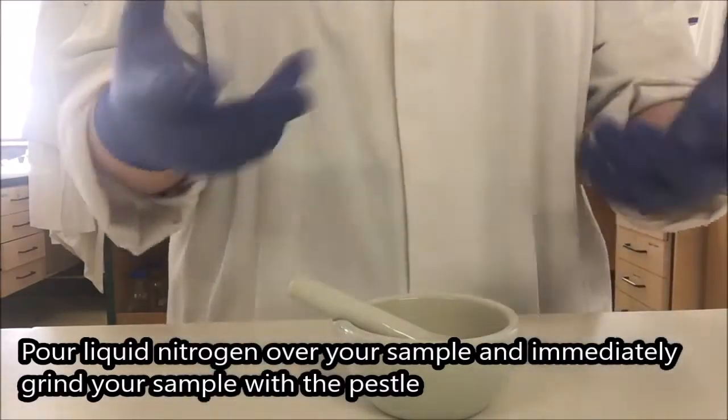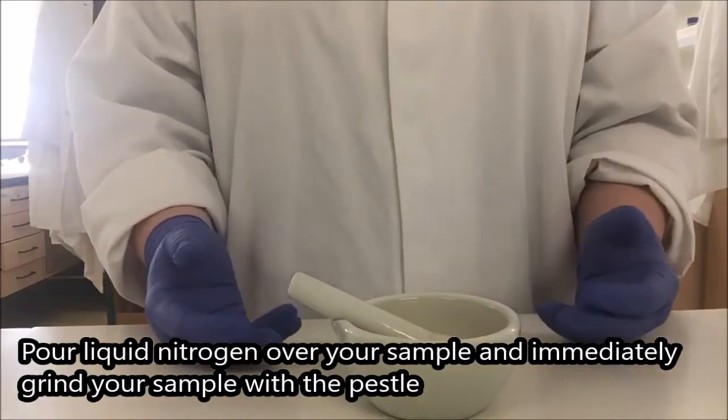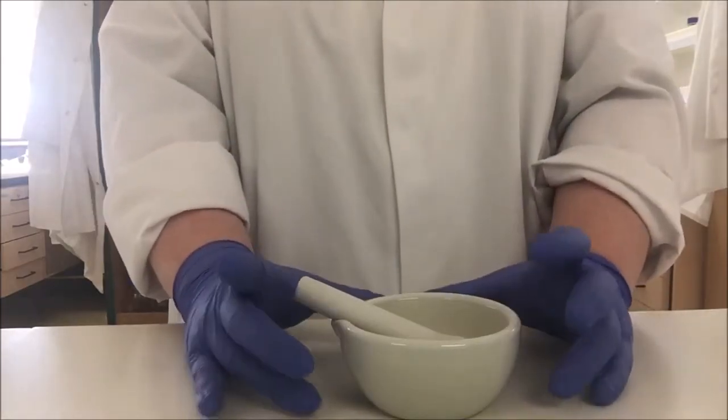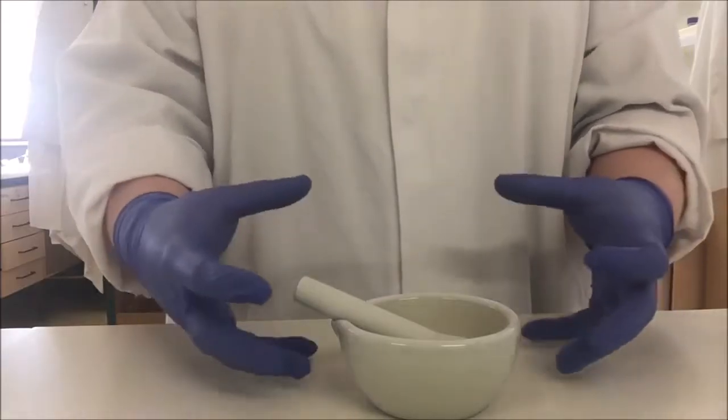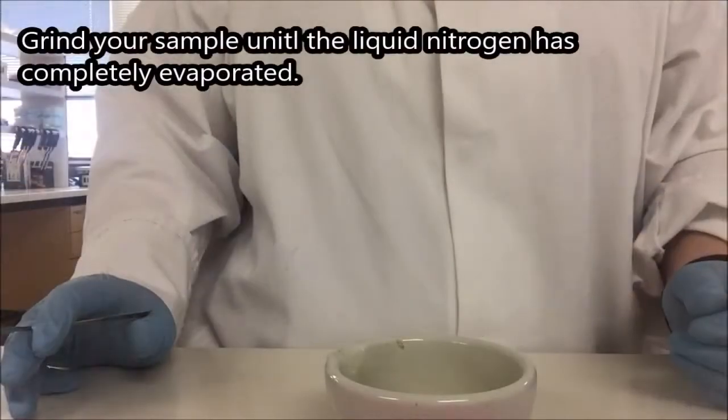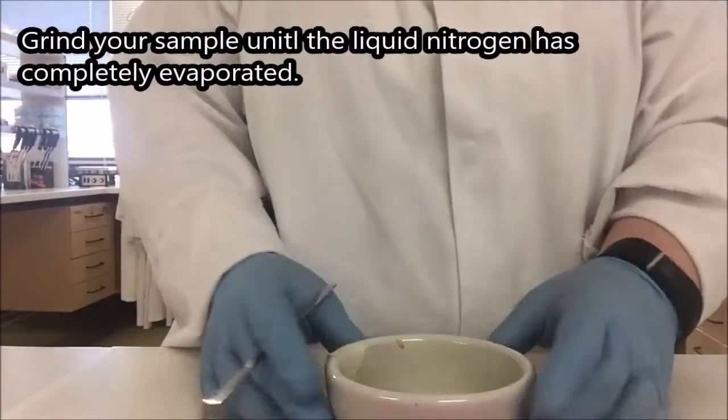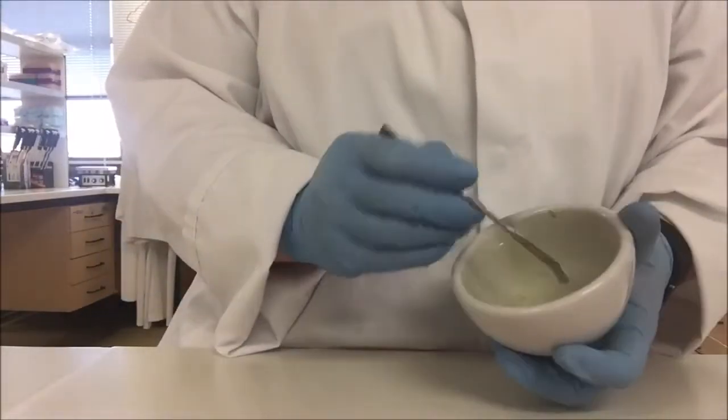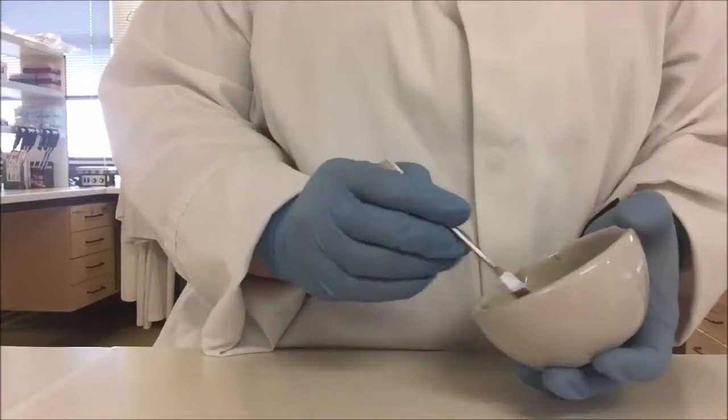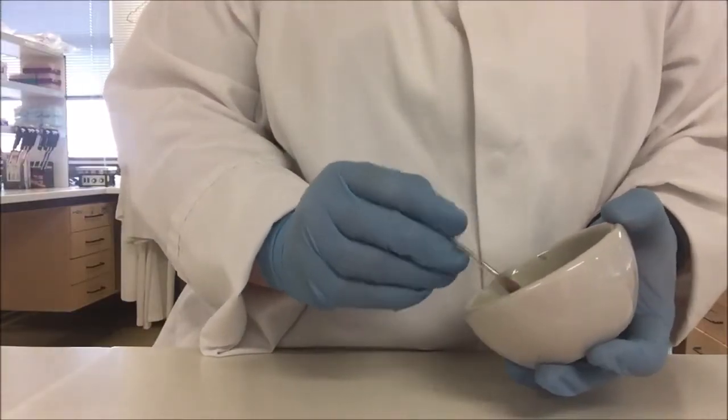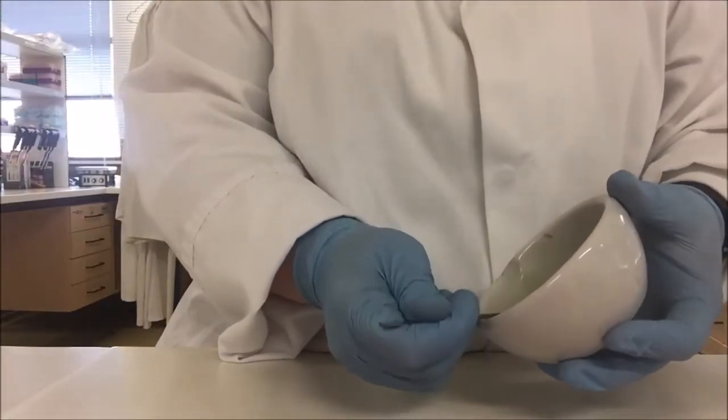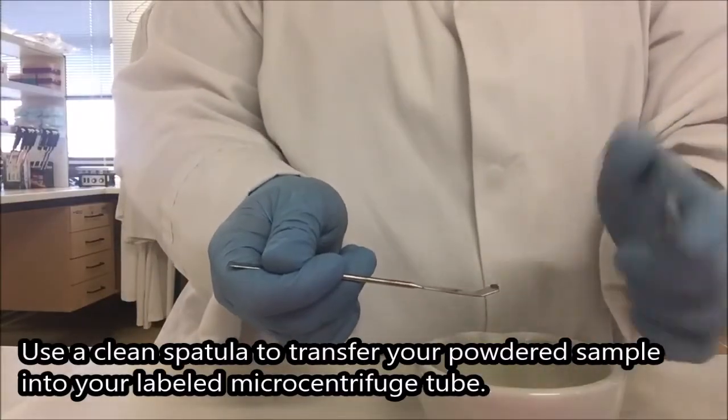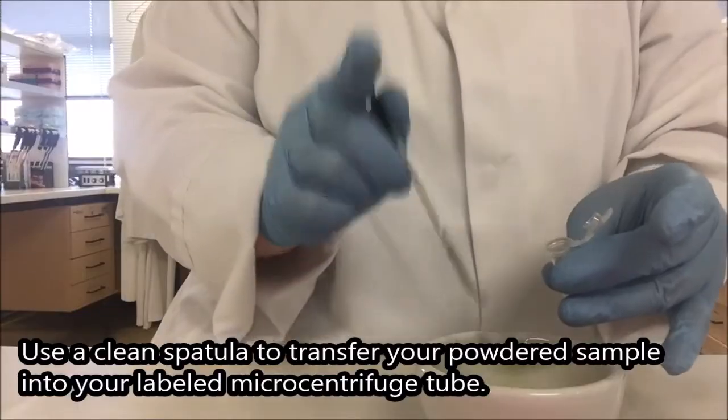When this happens, a white cloud of steam coming up from the liquid nitrogen which will make it hard to see. But what will be happening underneath that steam is that the liquid nitrogen will be boiling. Once you've done crushing your sample, you'll end up with a very fine powder and you're going to use a clean spatula to scrape everything down into one part of the bowl, scoop it up and into a labeled microcentrifuge tube that you have prepared in advance.